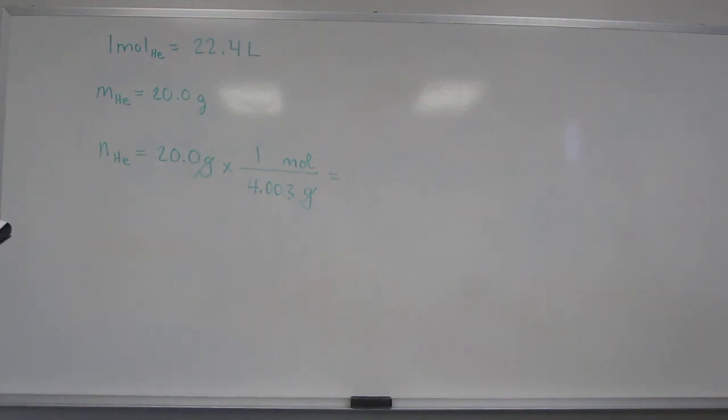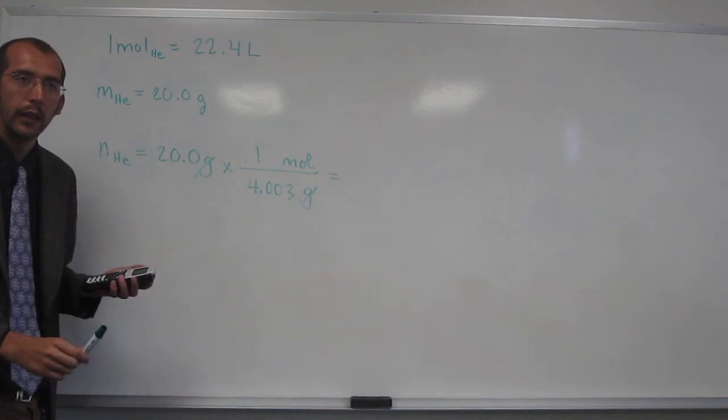So let's just take 20 divided by, well, this one we probably could have done in our head, 4.003, right? To the right number of sig figs is going to be 3.